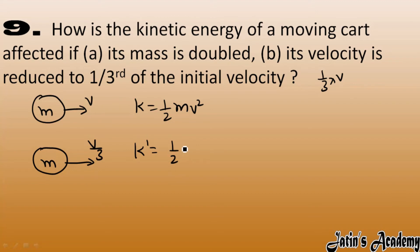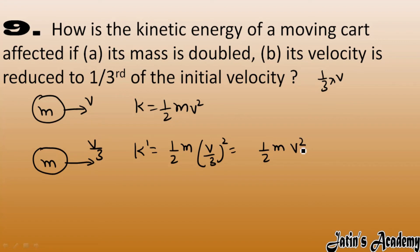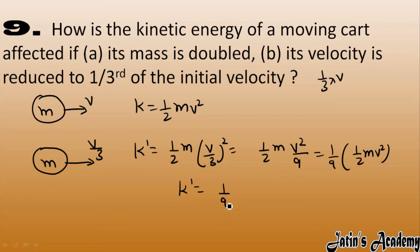Final kinetic energy K' = ½m × (v/3)² = ½m × v²/9. Taking 9 outside, we get (1/9) × (½mv²), which is K/9.